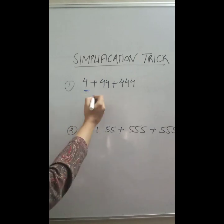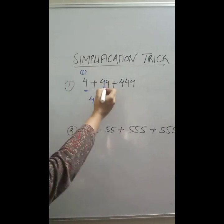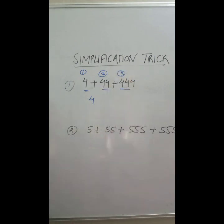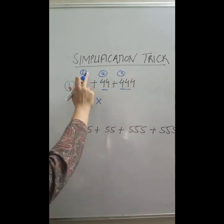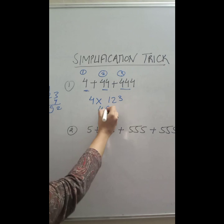So what simple thing we can do is the trick of this question says write the first digit here, which is four. Now just count how many fours are there in all the three numbers. Here I just have one, here I have two, here I have three. So the simplest trick is 4 into 1, 2, 3, which is 1, 2, 3. Now here you can simply multiply 4 and you get here 4, 9, 2, simple.